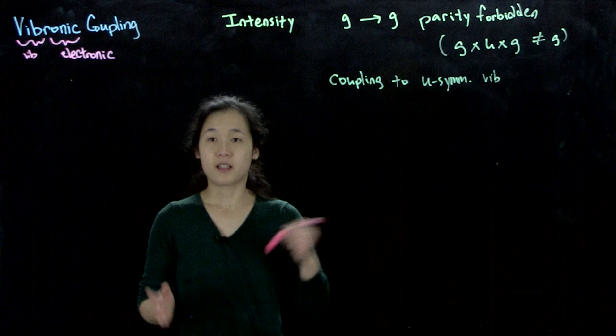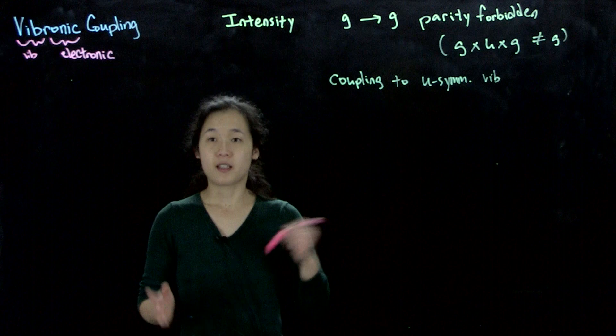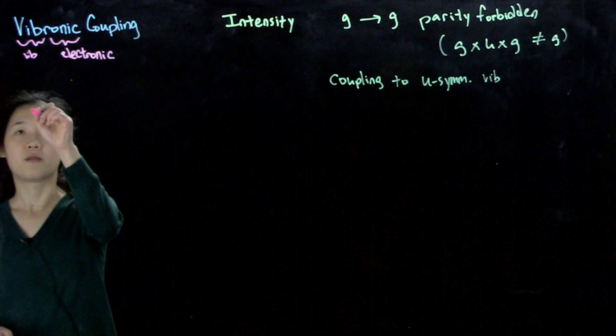Another way that vibronic coupling changes our spectra is that it can also change our band shape. This is what we'll talk about mostly for this lecture.